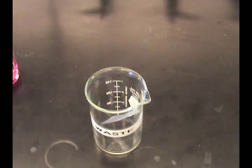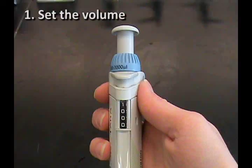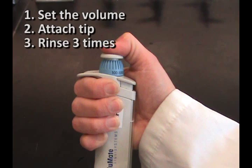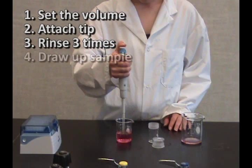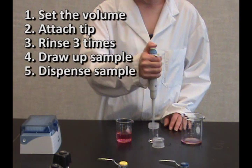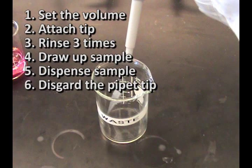Let's review the steps: Set the volume. Attach disposable tip. Rinse three times. Draw up the sample. Dispense the sample. Discard the tip.